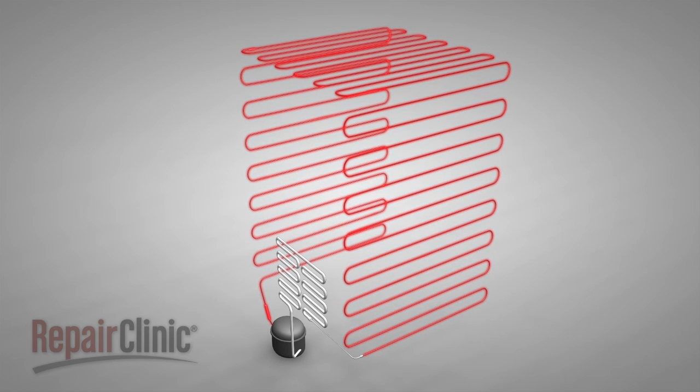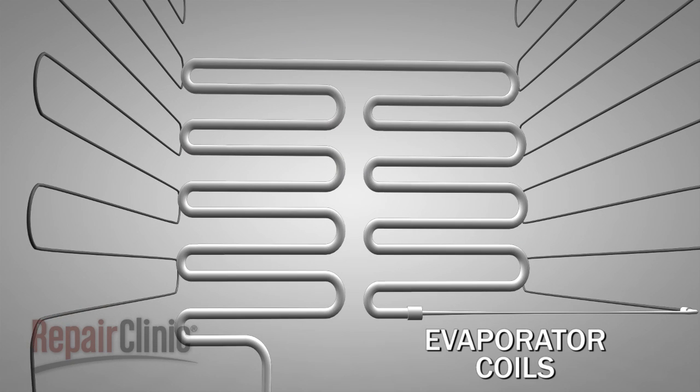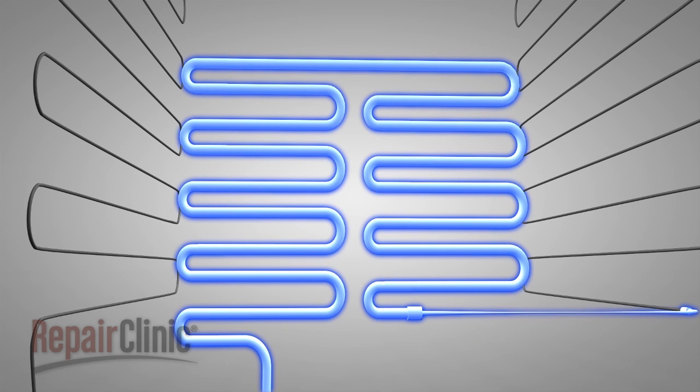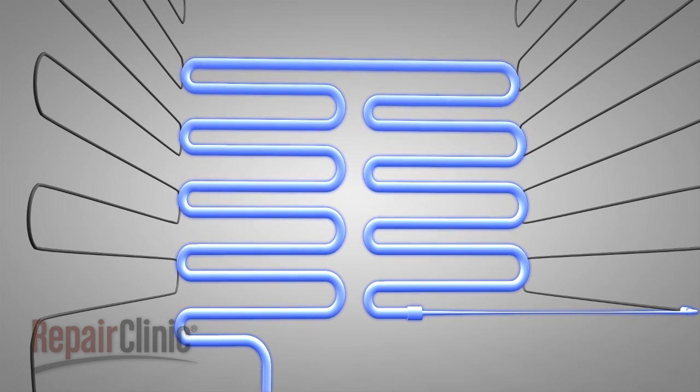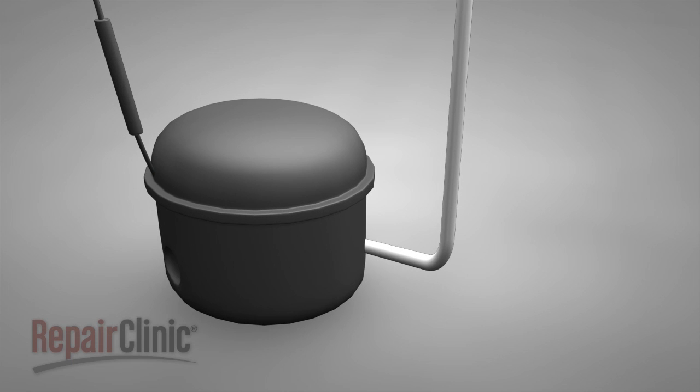Once the refrigerant has passed through the condenser coils and the capillary tube, it travels to the evaporator coil's cooling compartment. As the refrigerant liquid enters these coils, it expands into a gas, which makes the coils cold. The gas flows through the coils to a suction line attached to the compressor. The compressor converts the gas back into a liquid, and the cooling cycle continues.